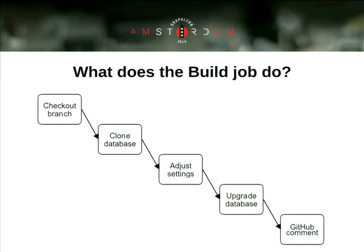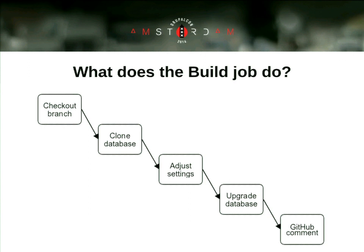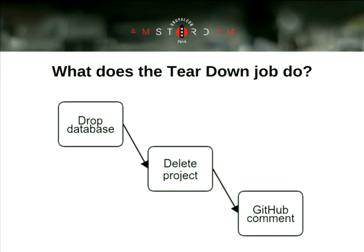The actual build job checks out the particular branch or pull request from GitHub. In the testing environment there is a master site — a template that holds the production or development database. It clones it, adding a suffix — for example, cloning 'mysite' to 'mysite_72' for pull request 72. In the new file structure, it adjusts settings and appends the database array, overwriting some settings as needed. Every project is different, so we normally make adjustments so it really represents a production environment. Then it runs all the steps to upgrade the database and finally posts a comment on GitHub. The teardown is simple: it drops the database, deletes all project files, and posts a comment.